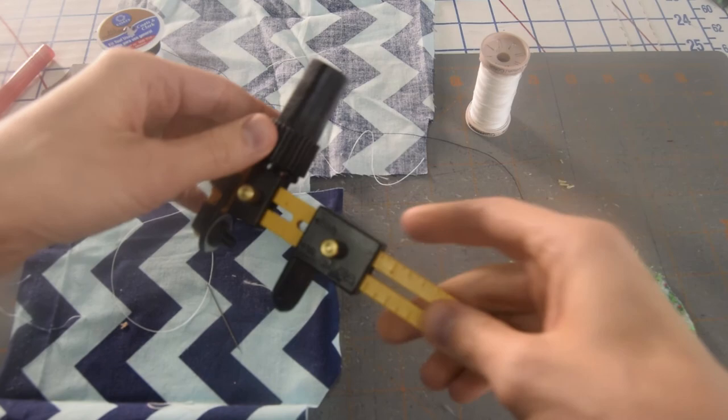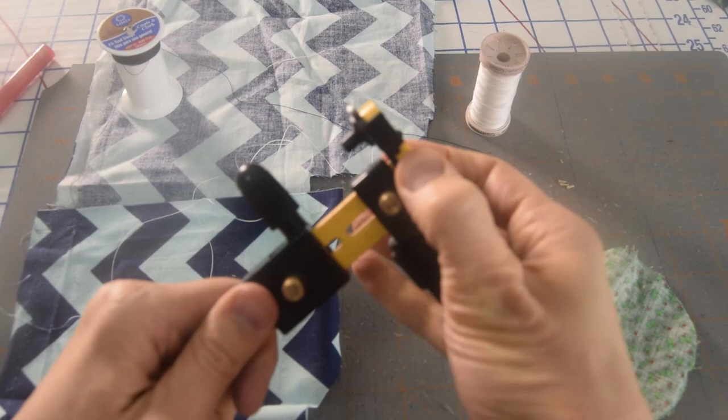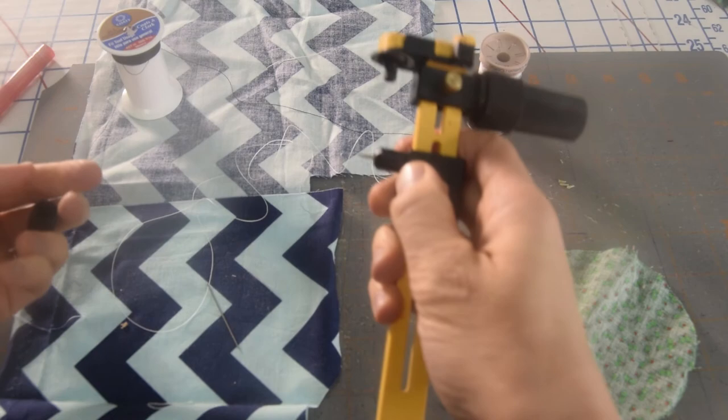Or you can use a tool like this. This is made by Olfa. It's a rotary cutter, but it makes circles. So it kind of works like a compass. It's got a blade guard here and you just pull it down to expose the blade.